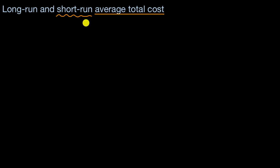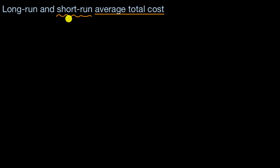But if we talk about longer term — say you're running a factory — in the short run, the short run would be how long it takes to build another factory or close down or sell one. But in the long run, you can always add more factories or shut down factories. So in the long run, everything is variable.